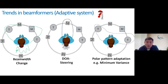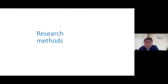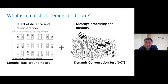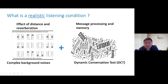Moving to our research methods — before going into our specific research, I want to recall something I have discussed in past seminars about realistic listening conditions. A realistic listening condition has sound sources at different distances from the listener and some reverberation, simulating things you experience in real life — for example, a cafeteria with multiple people having conversations at tables, positioned at various distances, where sounds reflect off walls and surfaces and all arrive to you at the same time.